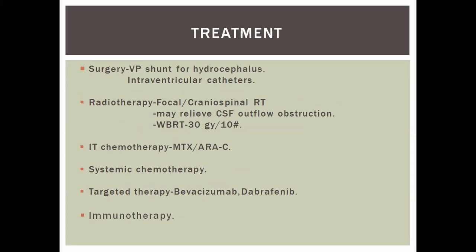Treatment includes surgical options: VP shunt (ventriculoperitoneal shunt), intraventricular catheters, and Ommaya reservoirs. Radiotherapy: if there is CSF obstruction or bulky neurological disease, focal or craniospinal RT may be used, though craniospinal RT is avoided when possible due to associated toxicity. Whole brain RT uses the same 30 Gy fractionation. Intrathecal chemotherapy agents include thiotepa, cytarabine, and methotrexate. Systemic targeted therapies including bevacizumab, dabrafenib in melanoma, and anti-angiogenic agents have been used. Immunotherapy is also now an option.